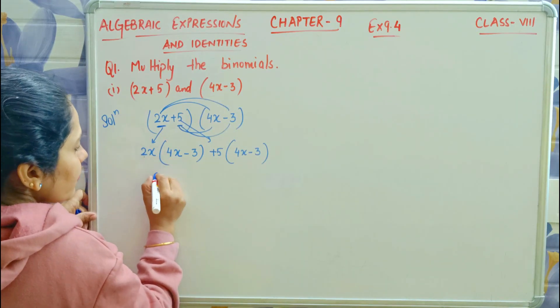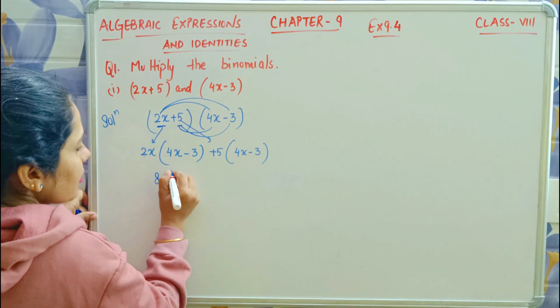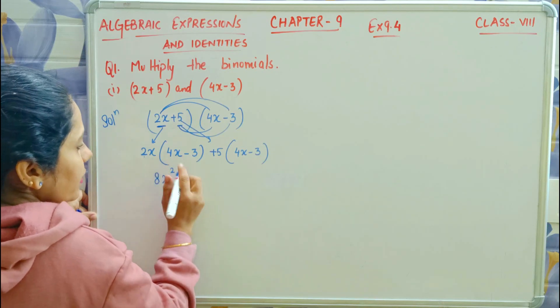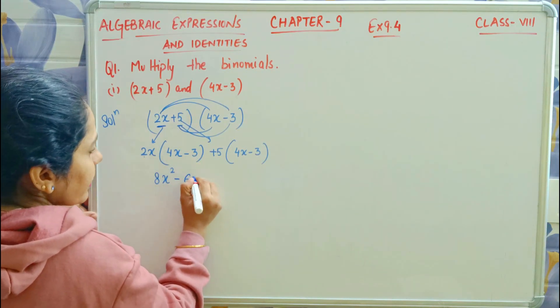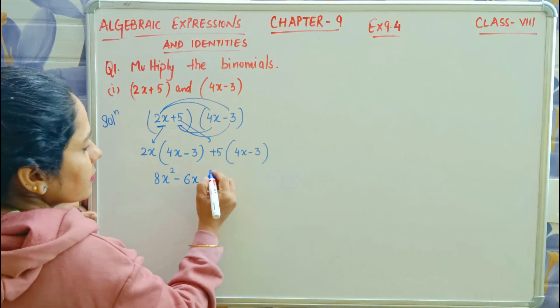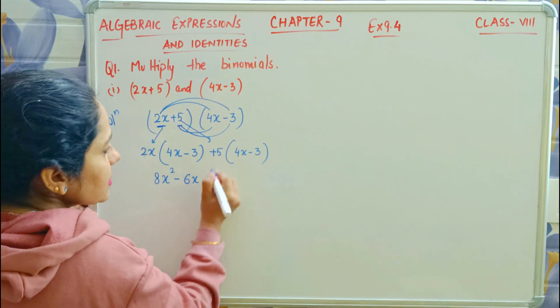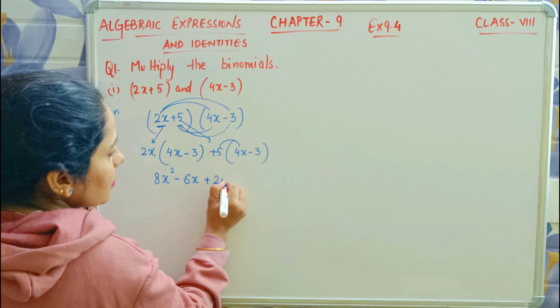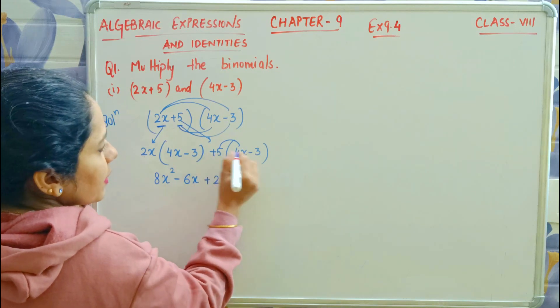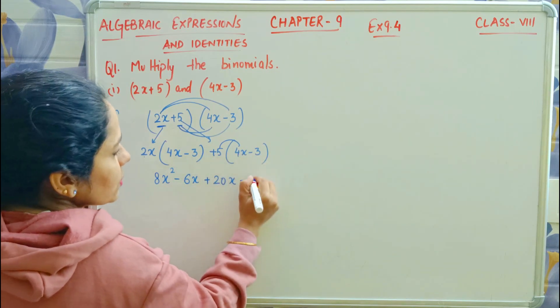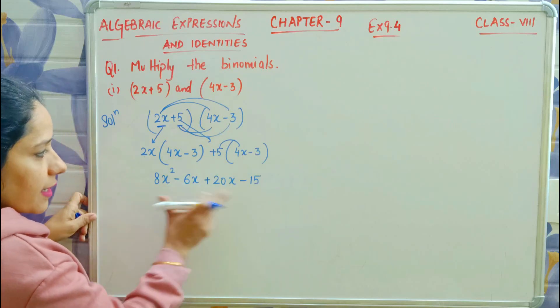2 times 4 is 8, x times x is x squared. Minus 3 times 2 is 6x. Plus 5 times 4 is 20x. Plus minus, minus 5 times 3 is 15.